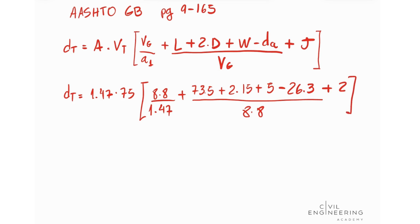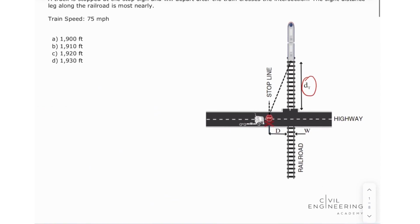So if we solve this equation we're going to see that our side distance lag along the railroad, the D sub T, is equal to 1,910.3 feet. This gives us the answer letter B.